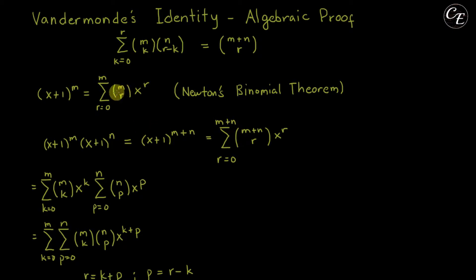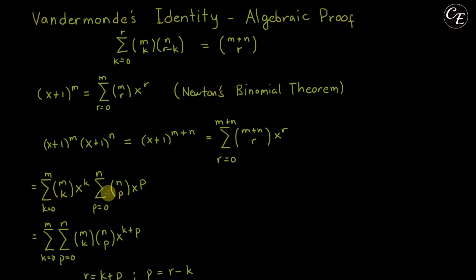We can also apply this theorem to each term separately. For the first term, we use k instead of r, and for the second term we use n instead of m and a variable p instead of r. The variable k is not contained in the second summation, and p is not contained in the first, so we can combine both summations into a double summation: k from 0 to m and p from 0 to n, with combinatorial terms m chooses k and n chooses p, and x raised to k plus p.